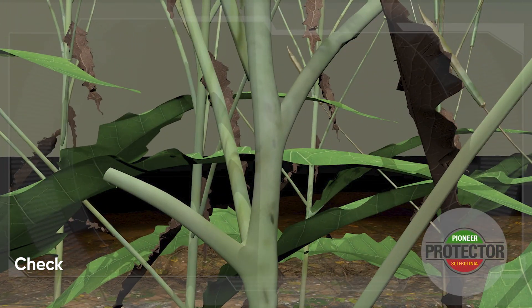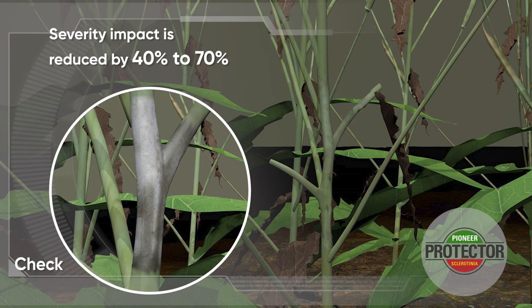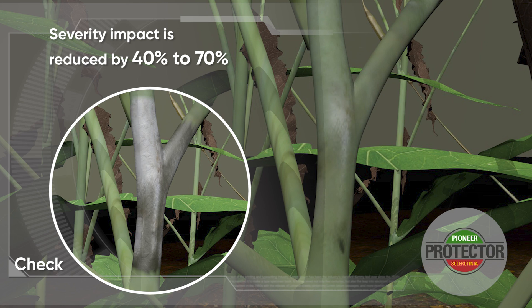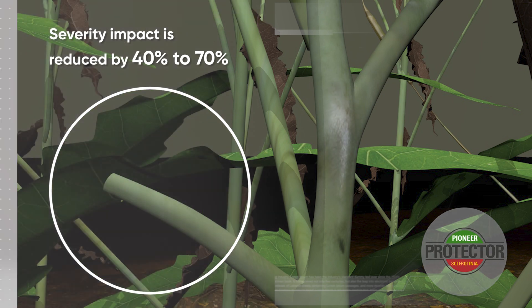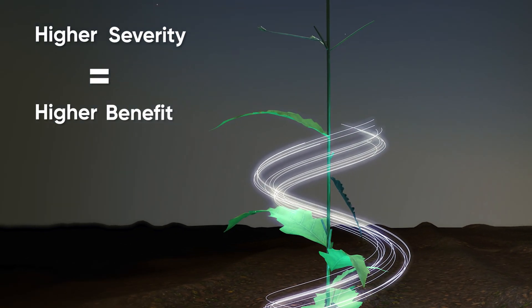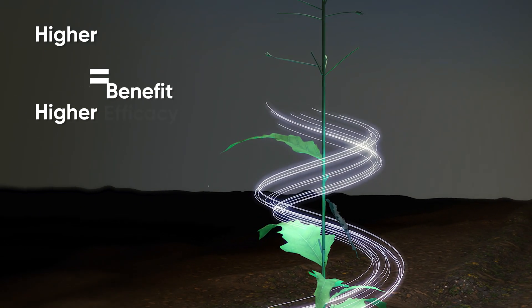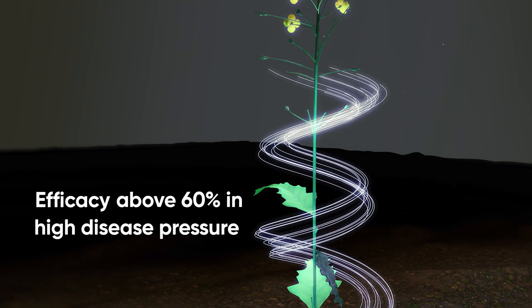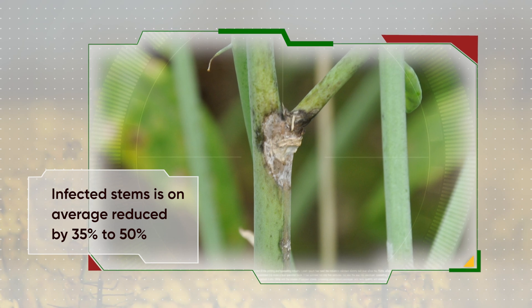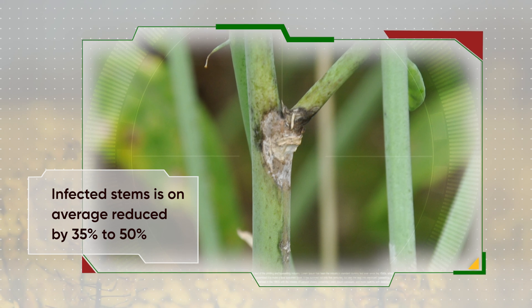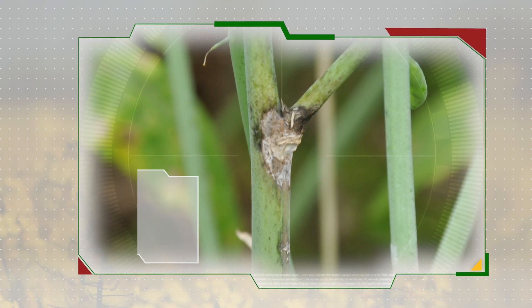This reduces the development of the disease within the plant. The severity impact is reduced by 40% to 70% when compared against sensitive checks. The higher the severity, the higher the benefit — in terms of efficacy of Sclerotinia Protector trait versus checks, typically above 60% in high disease pressure, which is the efficacy level of a good fungicide protection. Not only are incidence and severity reduced, but the overall percentage of infected stems is on average reduced by 35% to 50% versus sensitive checks.